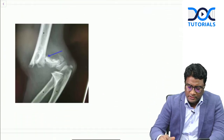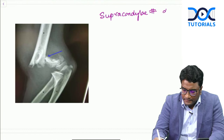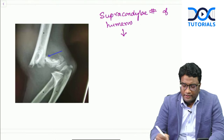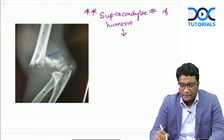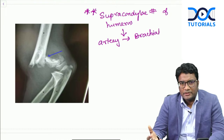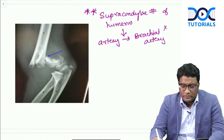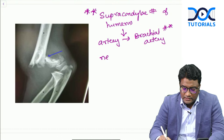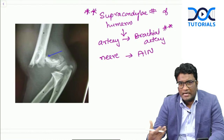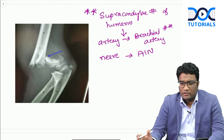There was a question showing a supracondylar fracture of humerus and asking which artery is compromised. Remember: supracondylar fracture of humerus is a very important topic. The artery involved is the brachial artery - this is why we get Volkmann's ischemic contractures in these patients, due to compression of the brachial artery. The answer is brachial artery. The nerve involved in supracondylar fractures is the anterior interosseous nerve. An option of anterior interosseous artery may be given, but that is not the answer - it is the brachial artery.